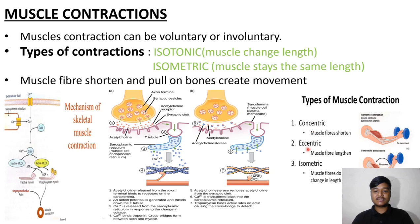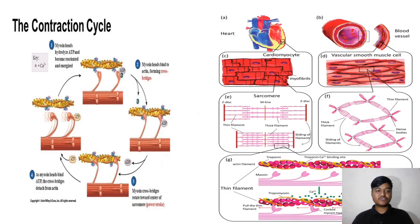There are three types of muscle contraction: concentric, eccentric, and isometric. Muscle contraction occurs in four different steps, and can also be observed in different parts such as the heart and blood vessel cells.